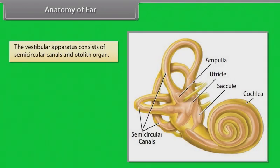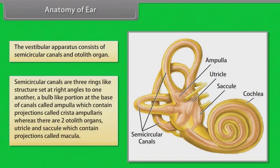The vestibular apparatus consists of semicircular canals and the otolith organ. The semicircular canals are three ring-like structures set at right angles to one another, with a bulb-like portion at the base called the ampulla, which contains projections called the crista ampullaris. The two otolith organs — the utricle and saccule — contain projections called the macula.